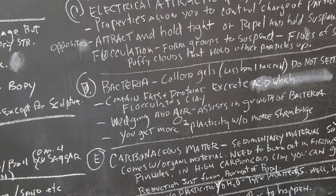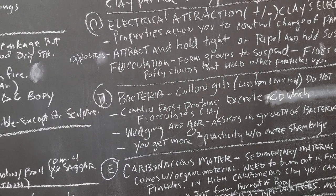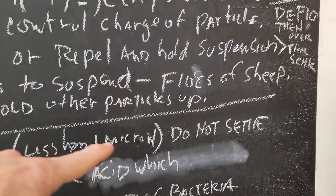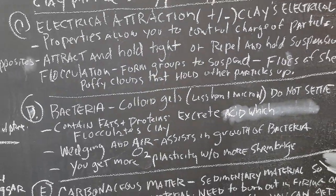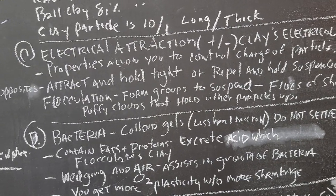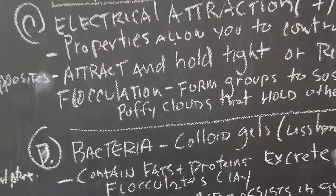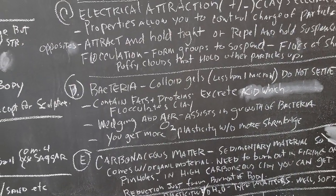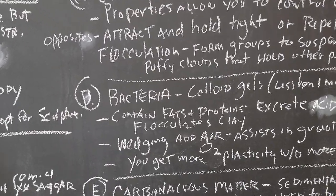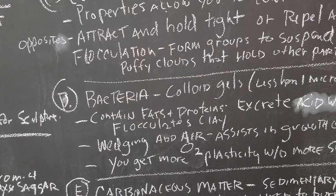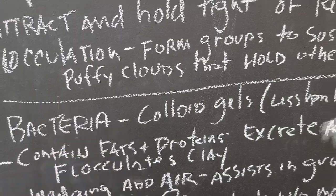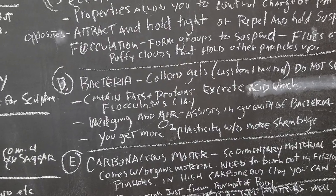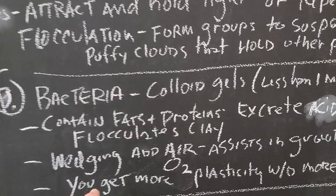Another agent that accounts for plasticity is bacteria in clay. Bacteria are basically colloidal gels less than one micron that don't settle — fats and proteins. The bacteria also excrete an acid, which is basically how it flocculates the clay. That's why having bacteria in clay and aging it makes it better to throw with and more plastic. When you wedge clay the idea is you're adding air, giving bacteria more ability to grow. Having a lot of bacteria lets you get more plasticity without more shrinkage.